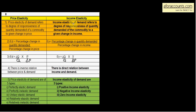Income elasticity of demand refers to the degree of responsiveness of quantity demanded of a commodity to a given change in income. That is, when income changes, quantity demanded changes because of that change in income. If my income increases, maybe I will demand more goods. If income decreases, I will manage with less and demand fewer goods. In price elasticity, price changes and demand changes. In income elasticity, a person's income changes and demand changes accordingly.